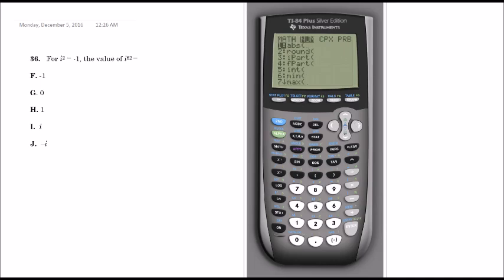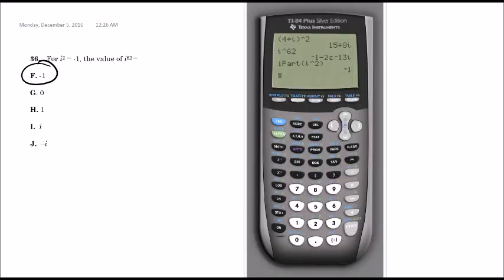And you're going to go into math on the left hand side underneath the green button. You're going to go over to num and you'll see i part under 3 there. So we're going to click enter on that. And now we can just type in i to the 62nd power. Click enter and you'll see it gives me the answer of negative 1, which is the correct answer here. And that is choice F. So if you get something weird for your imaginary number or if it just doesn't look right to you, use this i part there found in the math tab.